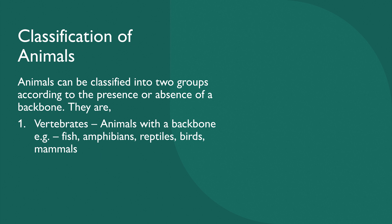The first group is vertebrates. The animals with a backbone are called vertebrates. For example, fish, all amphibians, all reptiles, birds, and all the mammals that live on our earth come under the group of vertebrates.